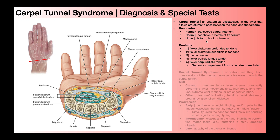The ulnar boundaries are the pisiform and the hook of hamate. We can see the pisiform here, and here's the hamate — we can't really see the hook of it because that's a little more proximal to where this cut was taken. The carpal bones sort of form a bowl, like you have in the kitchen, and certain things sit inside the bowl — the contents. Then this transverse carpal ligament runs over the top and forms a cap to the bowl, basically turning what was once a groove into an actual canal, or tunnel.